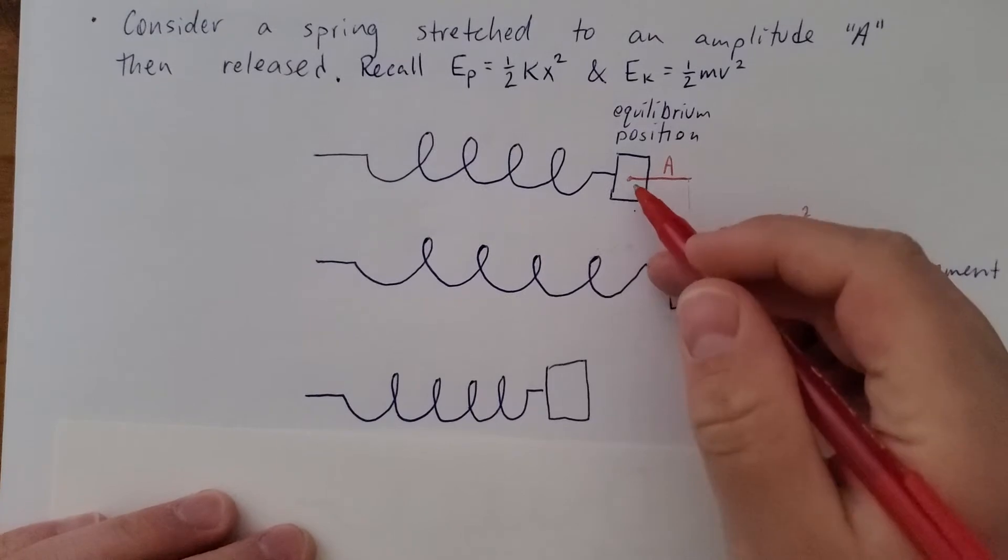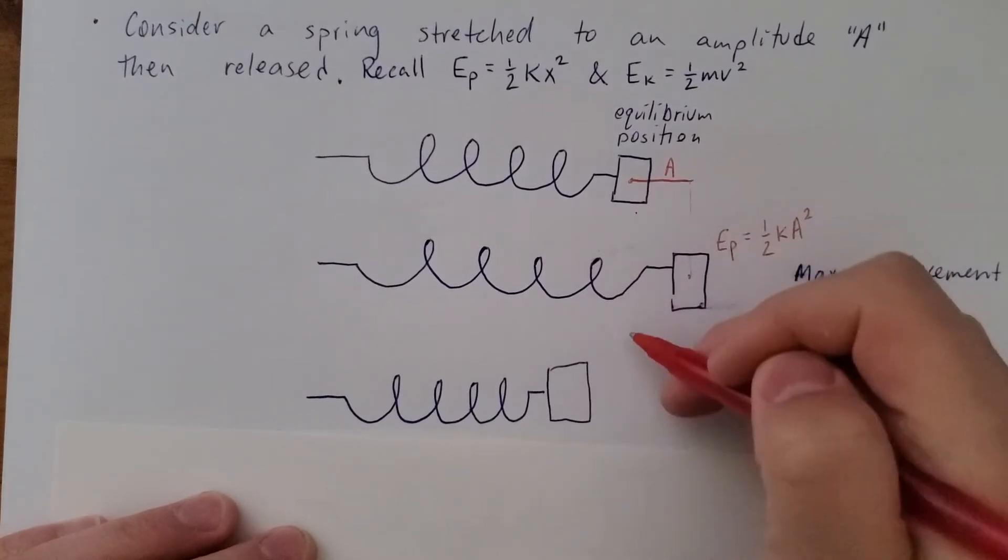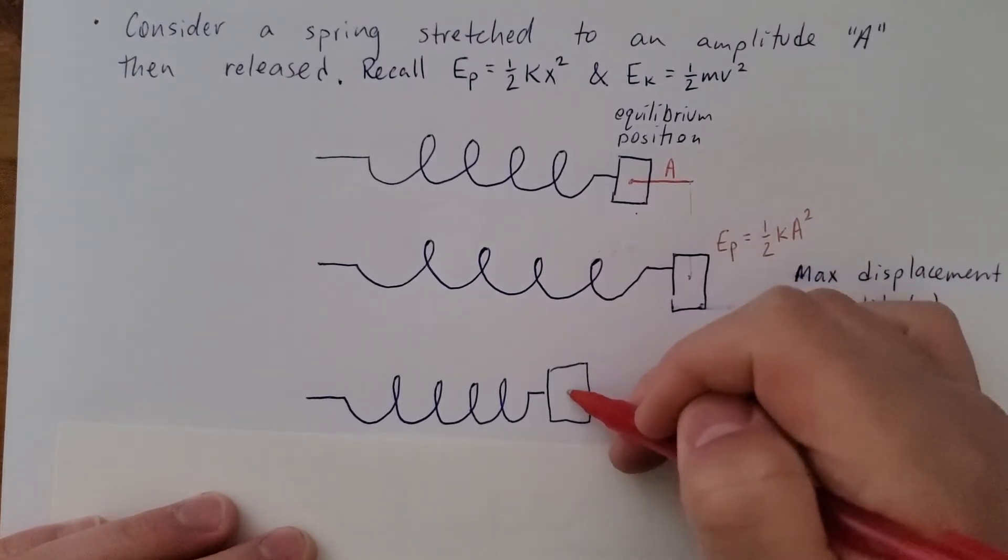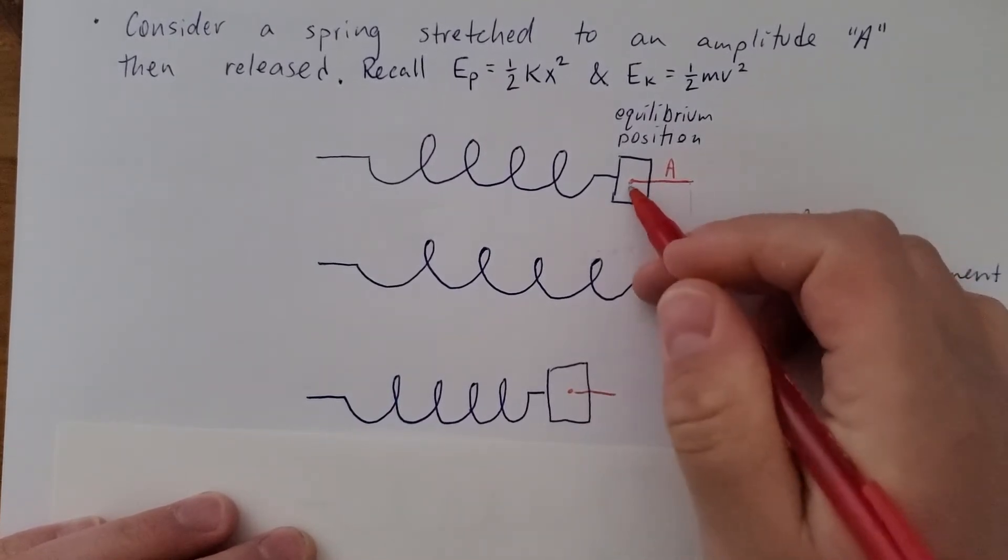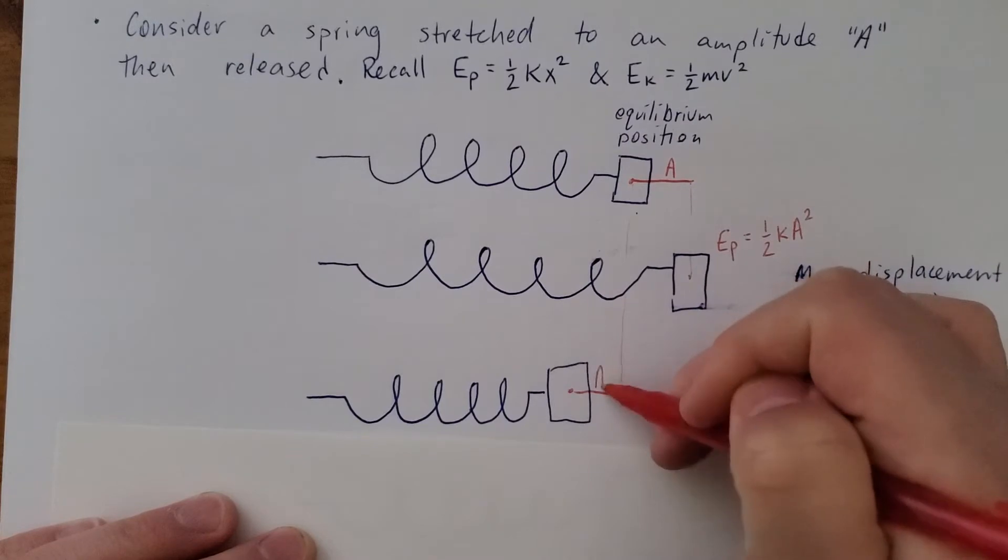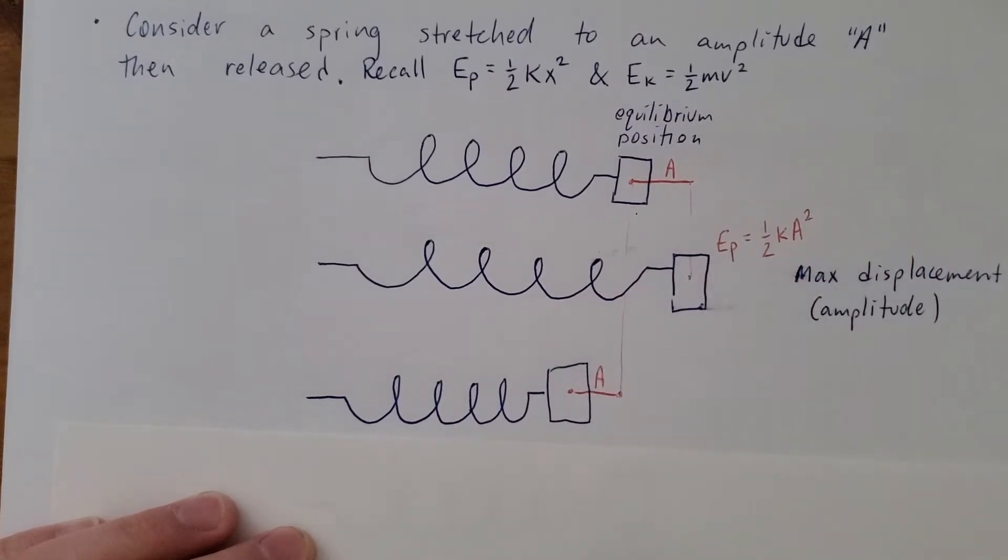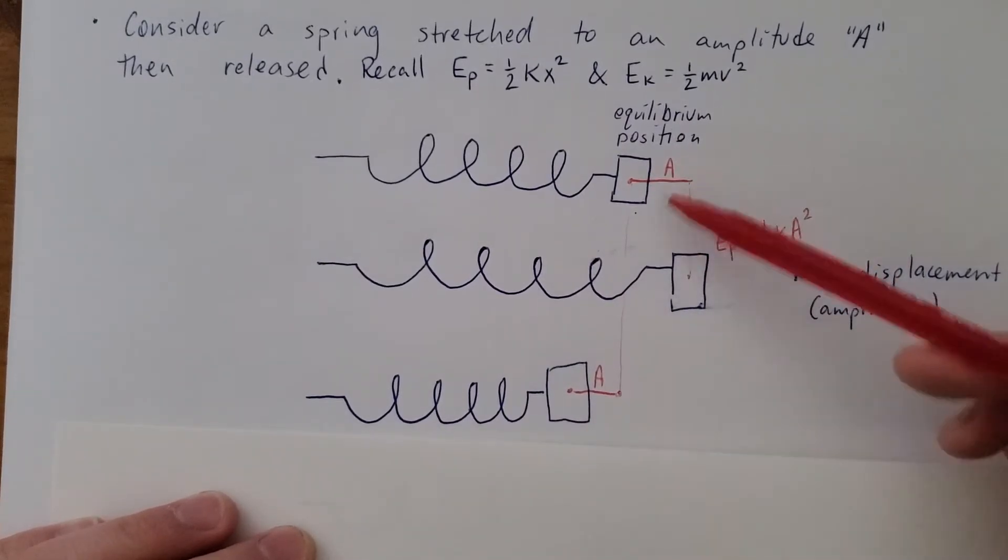If you have what's called an ideal spring with no friction, it'll actually compress to a displacement equal to the amplitude. So if it's in line with the equilibrium position here, this will also equal one amplitude. So this A, this A, same thing.